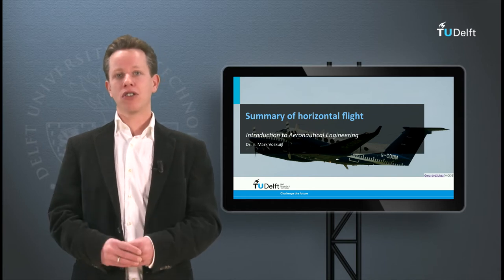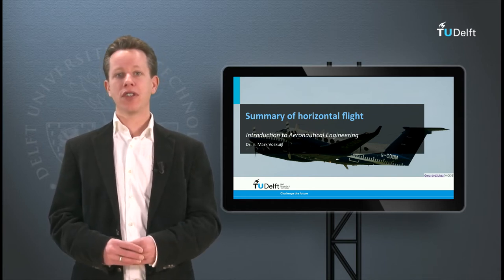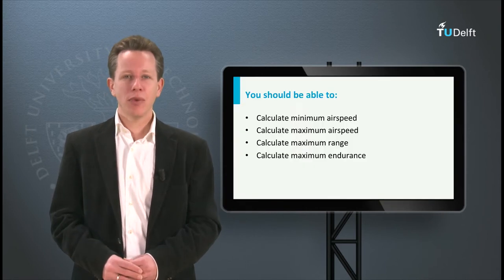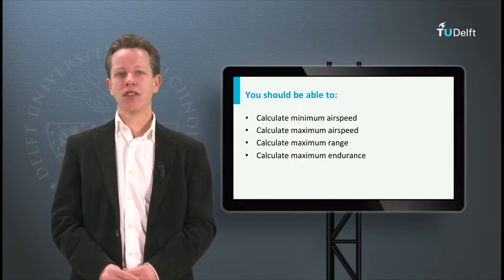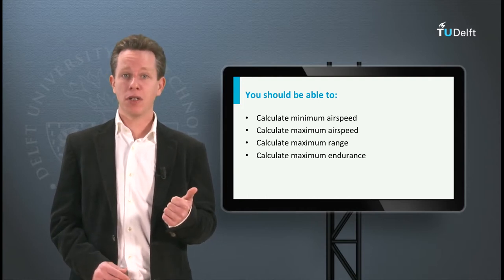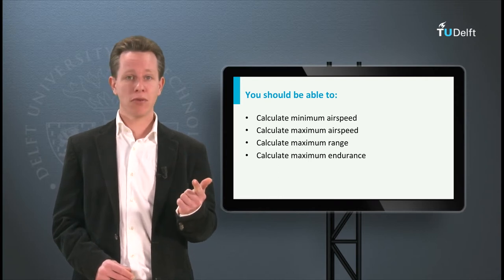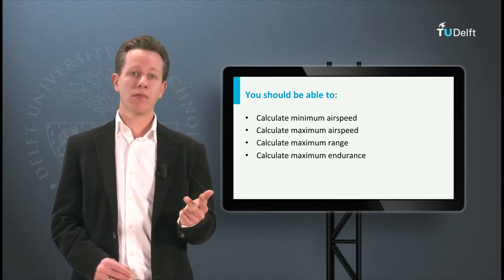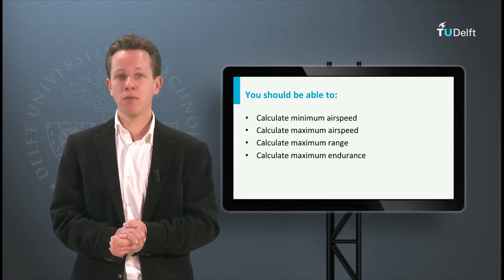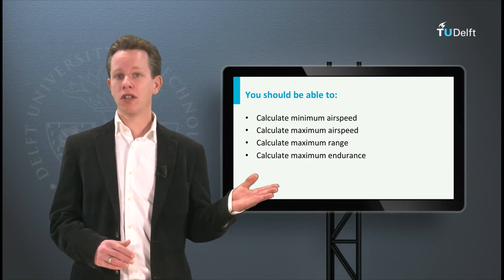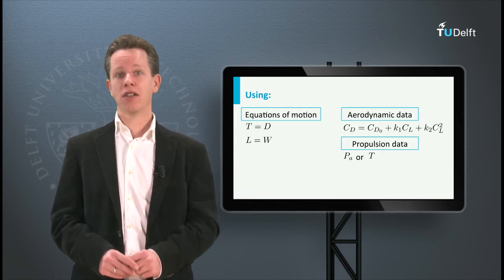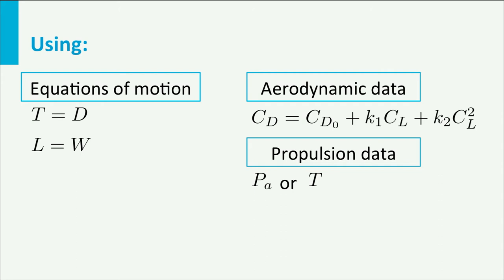At this point I would like to summarize briefly the material we've seen in the previous videos about horizontal flight performance. We discovered that there are four interesting performance parameters in horizontal flight: first the minimum airspeed, second the maximum airspeed, third maximum range, and fourth maximum endurance. By now you should be able to calculate all these parameters based on the equations of motion,